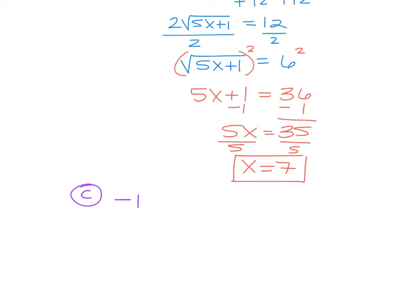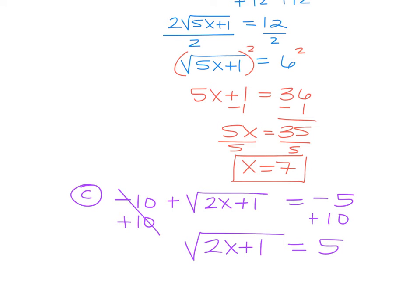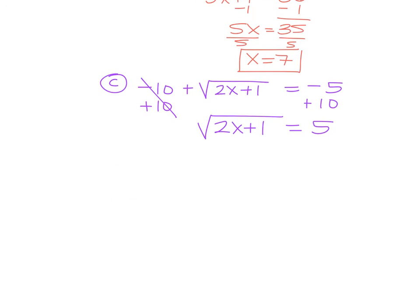How about this one? Negative 10 plus the square root of 2x plus 1 equals negative 5. Now, in the past, we've talked about how if a radical equals a negative, what? There's no solution, right? But that's not the case in this problem. Don't let this negative make you think, oh, no solution, because we haven't isolated yet. You can't check that unless you've isolated. So we start with isolating by doing what? We got to add the 10.